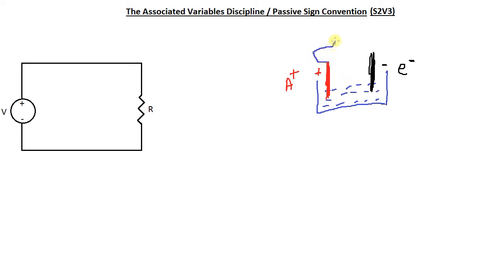When we connect a resistor, electrons will flow from the negative side to the positive side. That's because the negative electrode is at a lower potential, and electrons flow from lower potential to higher potential — which is the opposite behavior compared to positive charges. Positive charges move from higher to lower potential, but electrons have negative charge so they move from lower to higher potential.